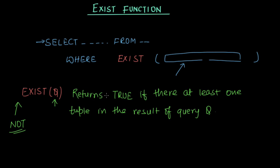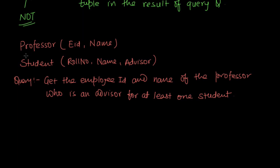Let's have an example to understand the EXISTS function better. We have two relations: professor, having attributes eid and name; and student, having attributes roll number, name, and advisor. The advisor attribute stores the eid of the advising professor — it's a foreign key referencing the professor relation.